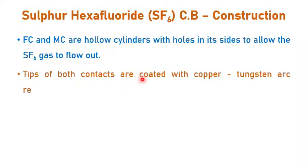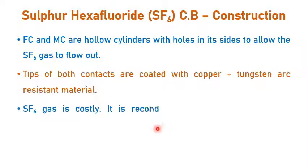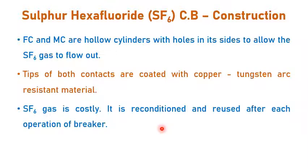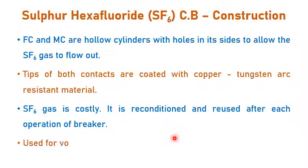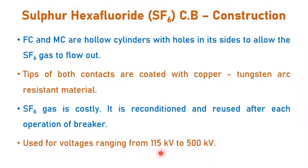The tips of both contacts are coated with copper and tungsten arc-resistance material, so the contacts remain safe even if the arc is struck often. Since SF6 gas is costlier, we can recondition and reuse it after each operation of the breaker, unlike mineral oil in an oil circuit breaker where the oil has to be replaced. This makes it suitable for high voltage operations ranging from 115 kV to 500 kV.